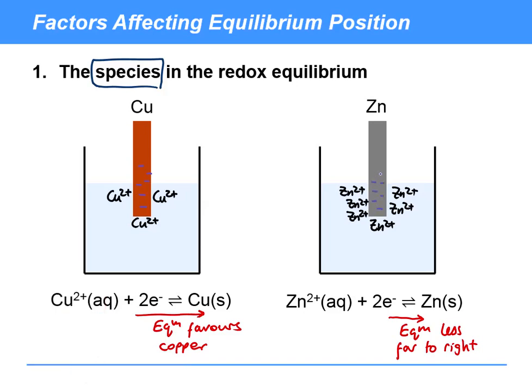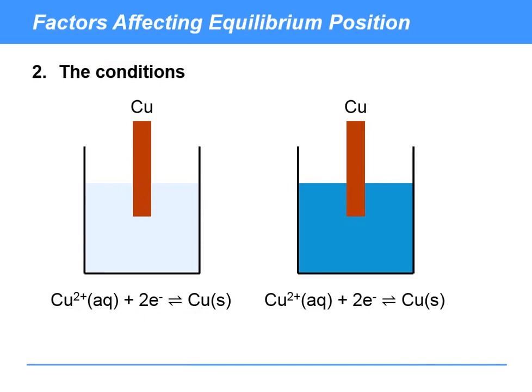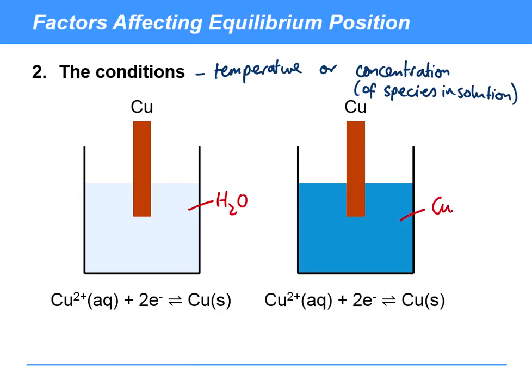The second factor that affects it's the conditions. So that could be either temperature or concentration of species in solution. There'll be a whole video devoted to this, but for example, just as a heads up, if I have either water in here or copper sulfate solution, that's going to markedly affect the position of the equilibrium. You might like to think how that is going to happen.